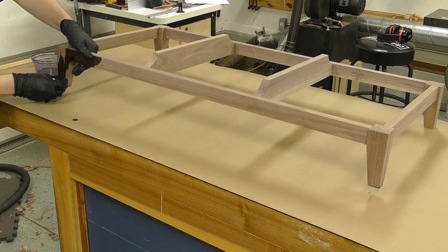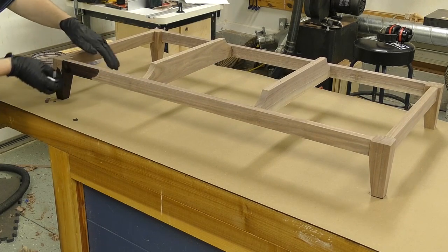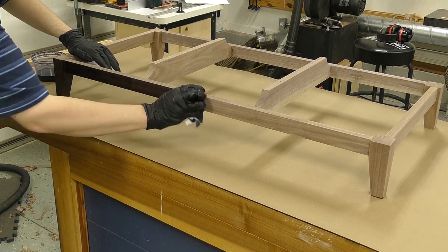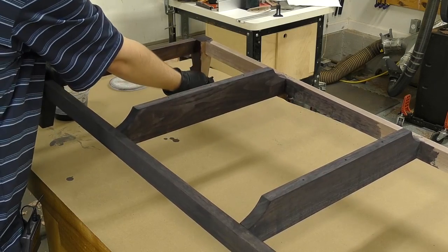Even though the base is a walnut, I know that it can lighten up over time and I wanted a nice contrasting look, so I dyed the base black. I used four ounces of denatured alcohol to point two ounces of a black trans tint dye.